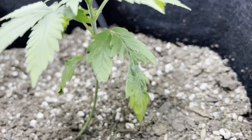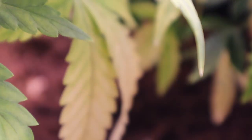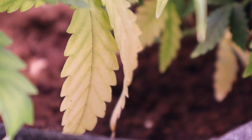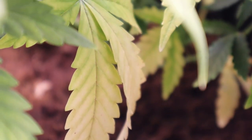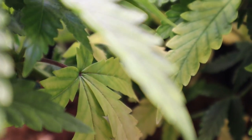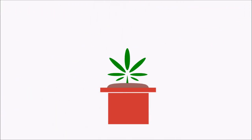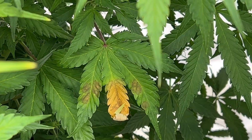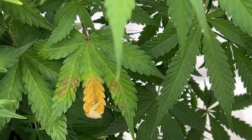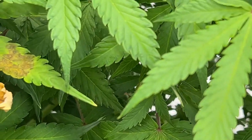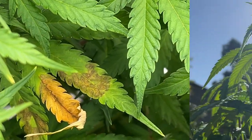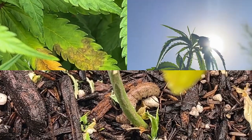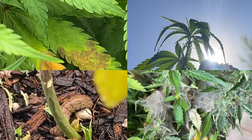While it's easy to tell when something might be wrong with your grow, pinpointing the problem is often much harder to do. So let's go over how to diagnose your sick plants. The first step is to figure out what type of issue you have: a nutrient issue, an environmental issue, a bug issue, or a disease.